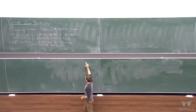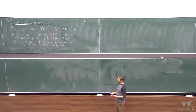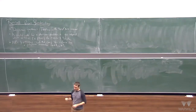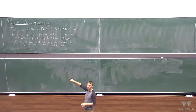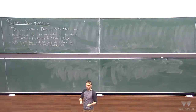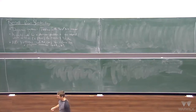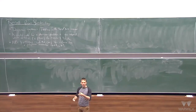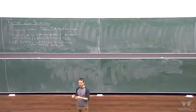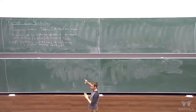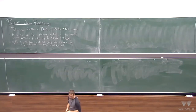NP is the set of all problems such that every yes-instance has a polynomial-time checkable certificate. If you change 'yes' to 'no' in that sentence, you get co-NP. There's an asymmetry: for a yes-instance you must have a polynomial-time checkable certificate, but you don't have to have one for a no-instance.